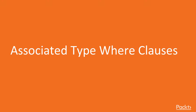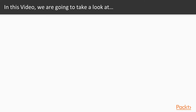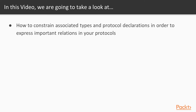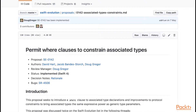So as said, first of all, we're going to start off by taking a look at associated type where clauses. In this video, we're going to be covering how to constrain associated types and protocol declarations in order to express important relations in your protocol. This is a feature that has been accepted and already implemented in Swift 4.